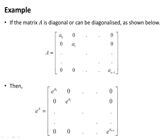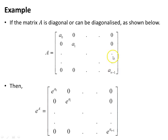As an example, if the matrix A is a diagonal matrix or can be diagonalized, such as this expression here, then e to the A is just the exponential of each of the elements on the diagonal.